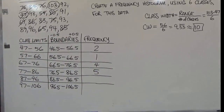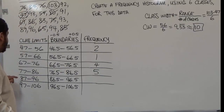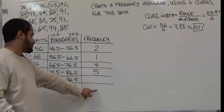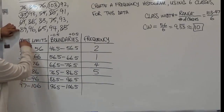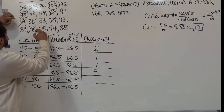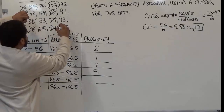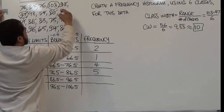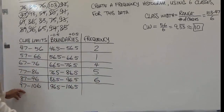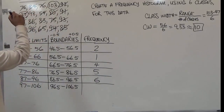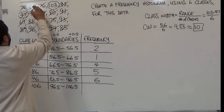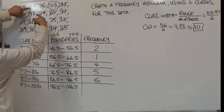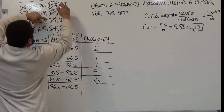For eighty-seven to ninety-six, the numbers are getting smaller. We count one, two, three, four, five, six — so six values belong to eighty-seven to ninety-six. The final remaining values go to the last class, ninety-seven to a hundred and six. Going down the list we see ninety-eight — that's one — and a hundred and three — that makes two.